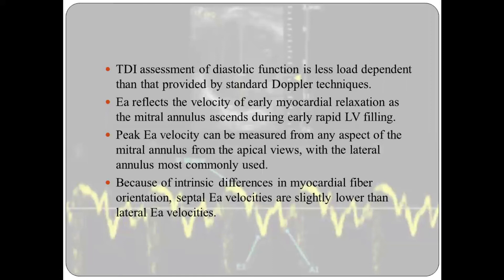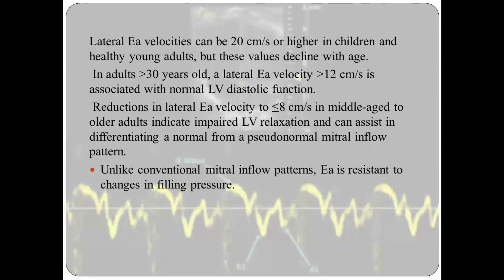Because of intrinsic differences in myocardial fiber orientation, septal E' velocities are slightly lower than lateral E' velocities. Lateral E' velocities can be 20 cm/s or higher in children and healthy young adults. In adults greater than 30 years old, a lateral E' velocity greater than 12 cm/s is associated with normal LV diastolic function. Reduction in lateral E' velocity to less than 8 cm/s in middle-aged or older adults indicates impaired LV relaxation and can assist in differentiating a normal from pseudo-normal mitral inflow pattern.